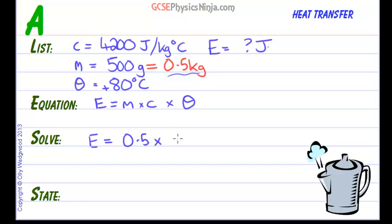Times by 4200, that's C, times by theta, which is 80 degrees Celsius. So we work this out. Let's grab the calculator. We're going to get 0.5 times 4200 times 80, and we get 168,000.